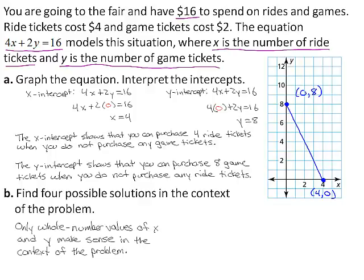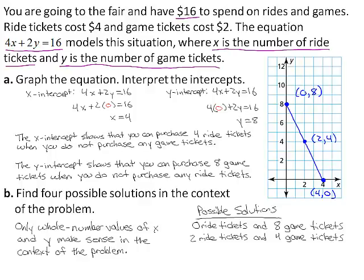Because the y-intercept is 0, 8, one possible solution is that you can buy 0 ride tickets and 8 game tickets. Notice that 2, 4 is a point on the line segment, so you can purchase 2 ride tickets and 4 game tickets.